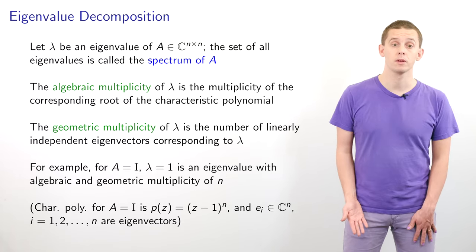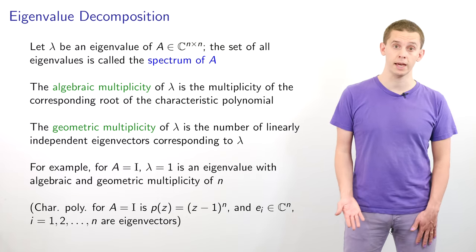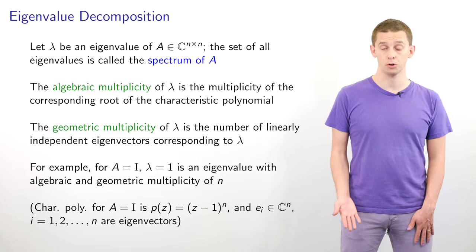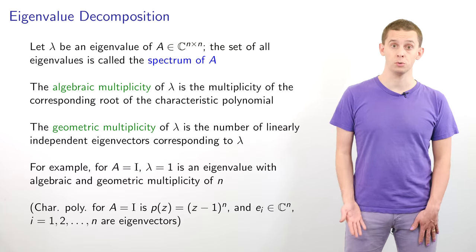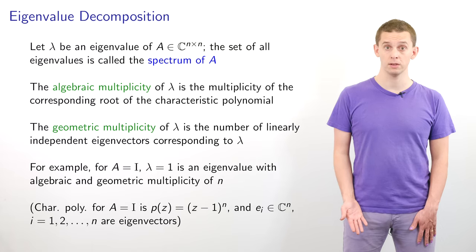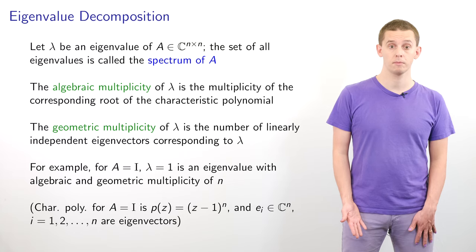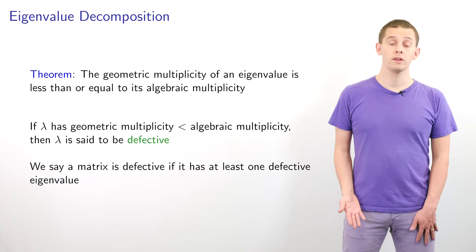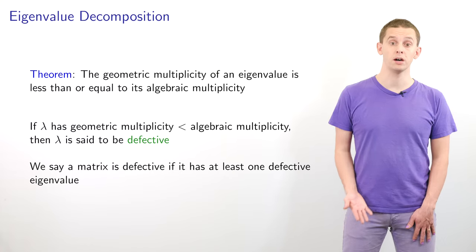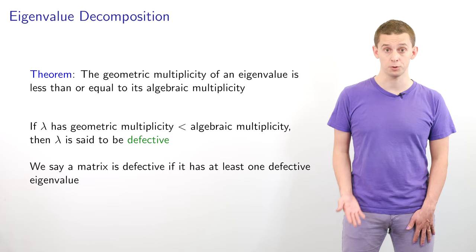We can also define the geometric multiplicity of lambda to be the number of linearly independent eigenvectors corresponding to lambda. For the identity matrix, the unit vectors e1, e2 up to en are all linearly independent eigenvectors corresponding to lambda equal 1, so the geometric multiplicity of 1 is also equal to n. There is a useful theorem that tells us the geometric multiplicity of an eigenvalue is less than or equal to its algebraic multiplicity.